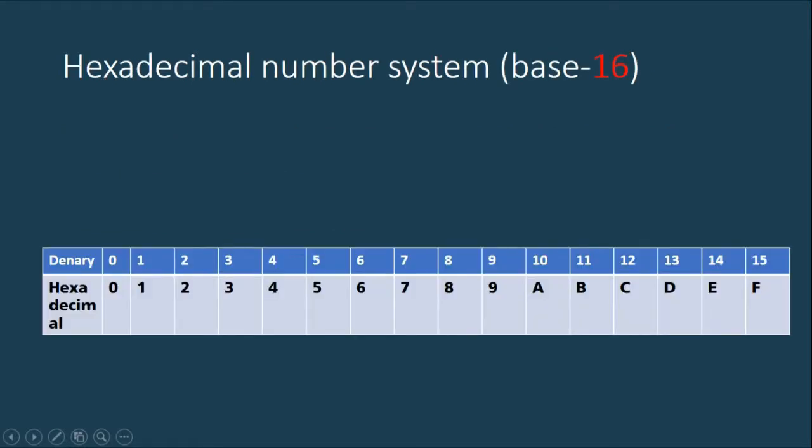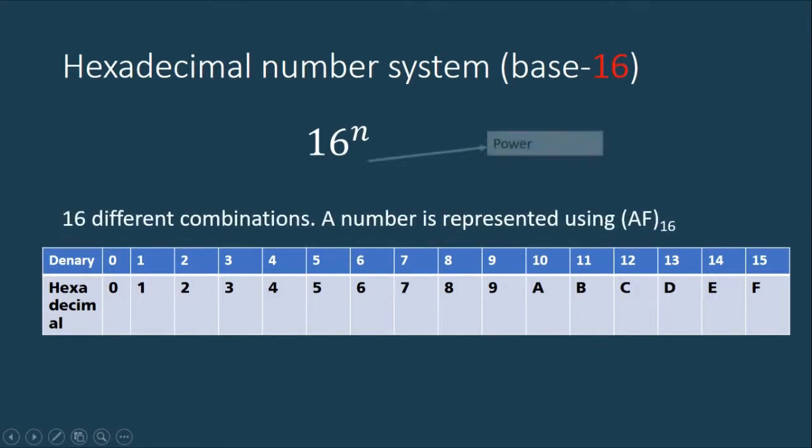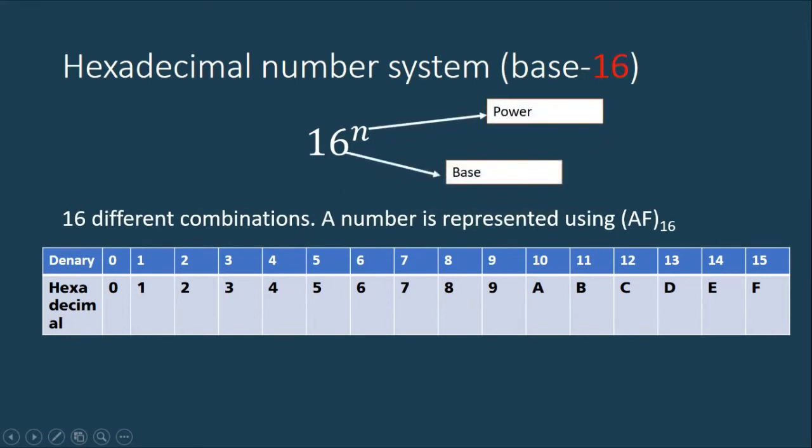Now let's move on to the hexadecimal number system. As you can see, the hexadecimal number system uses base 16. Therefore, all numbers will be represented as base 16 and the power n. So we're going to use base 16 numbers. Therefore, we have 16 different combinations.